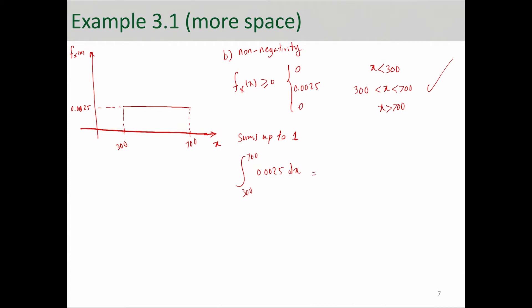So, if you do the math here and get this integration and integrate, it's 0.0025 times X from 700 to 300. And when you do the math, you will see that that is equal to 1. So, the second condition is passed.